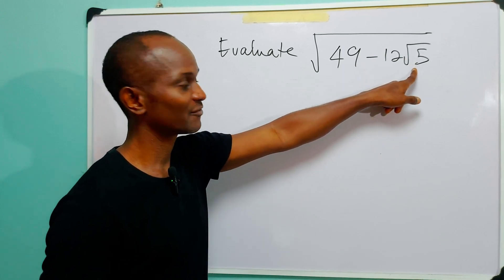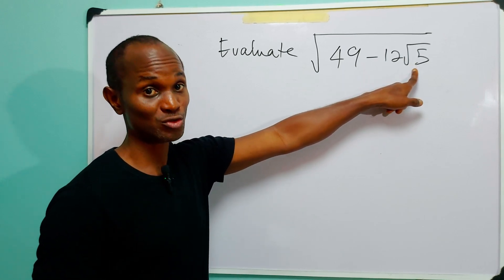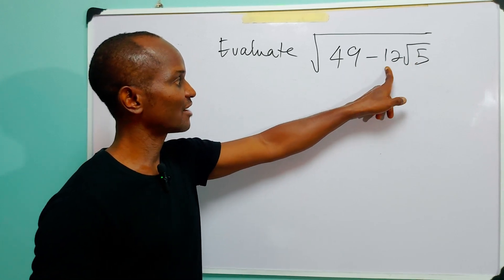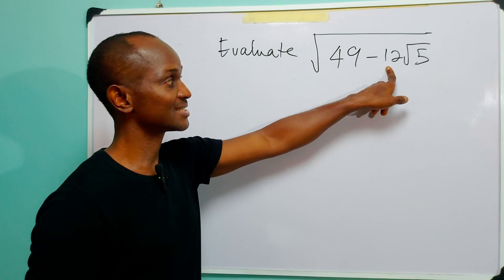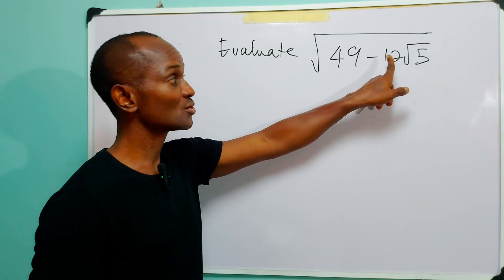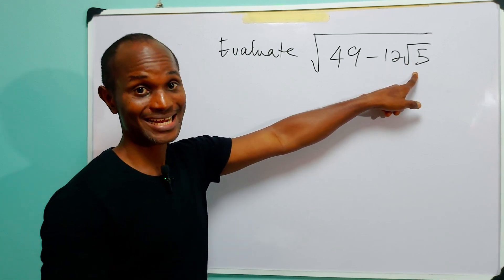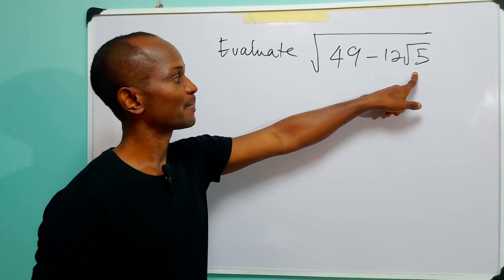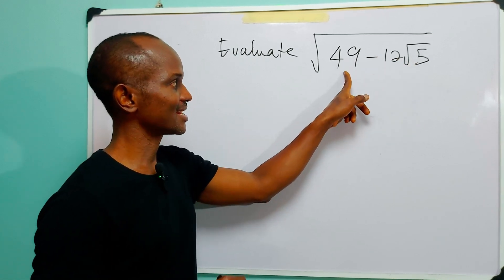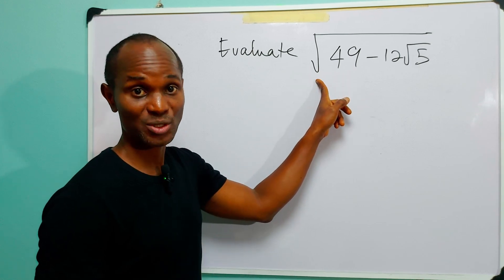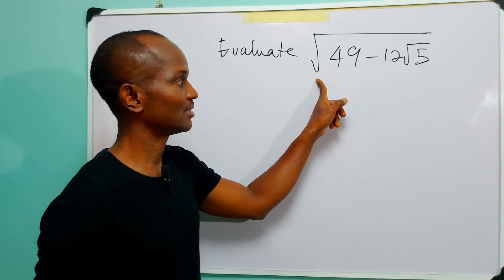We know that the square root of 5 is less than 2.5. Now 2.5 times 12 is 30, so 12 root 5 is less than 30. And 30 is less than 49, so this is a positive number.